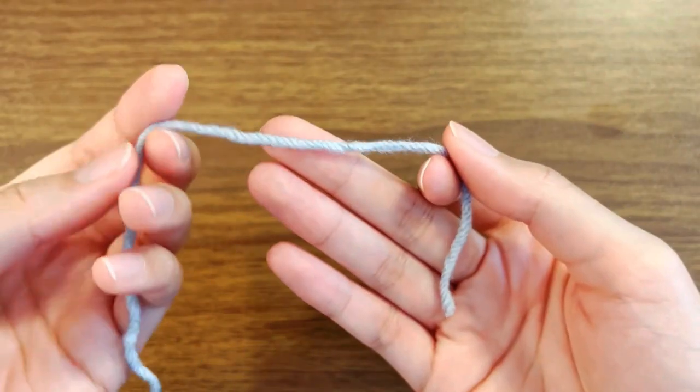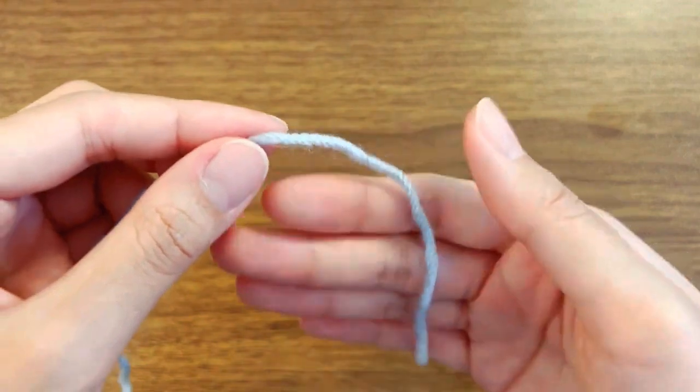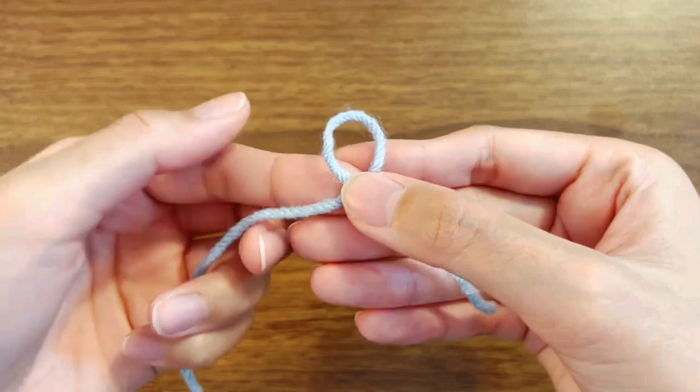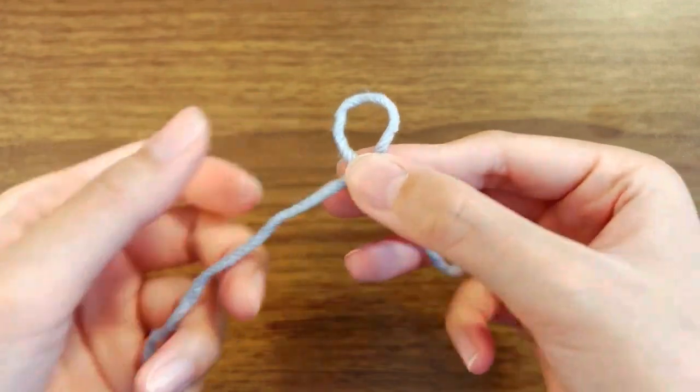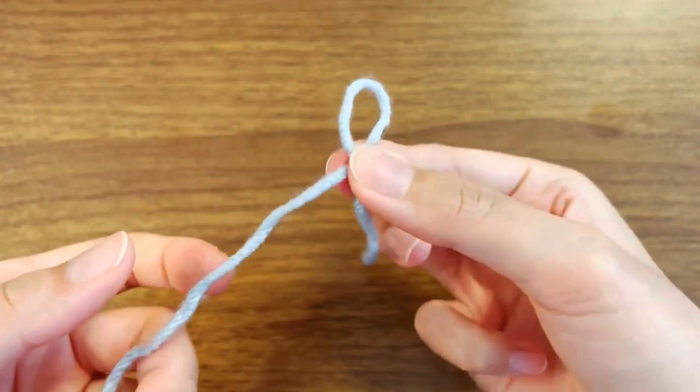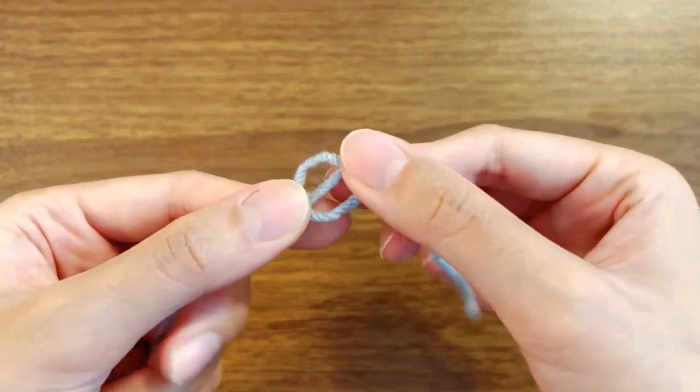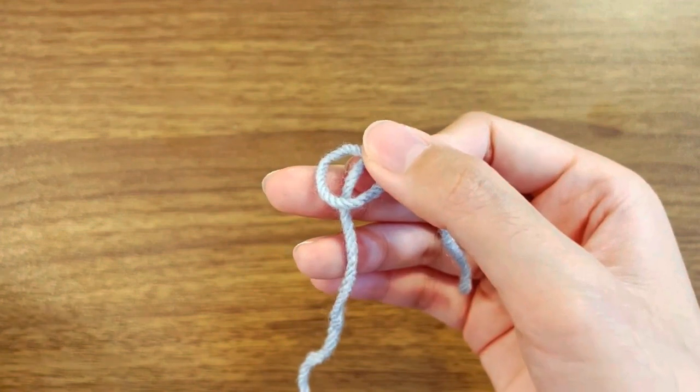To begin with, you have to grab some yarn and put the yarn crossing each other like that. Put your finger to hold it, then fold it over just like that and hold it like that for now.